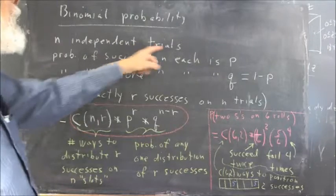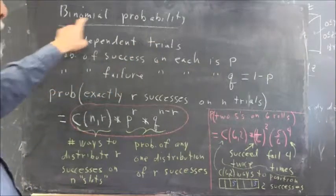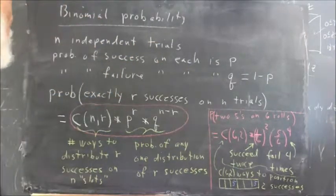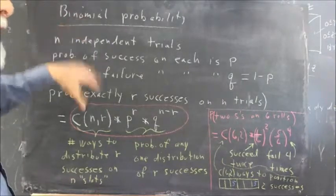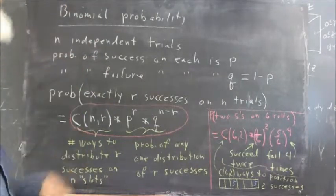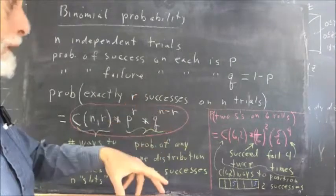And there are only two possibilities. Binomial means two, basically. There are two possibilities. Either we succeed on a roll, succeed in getting a five, or we fail.